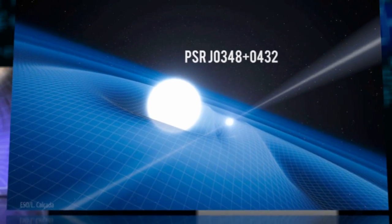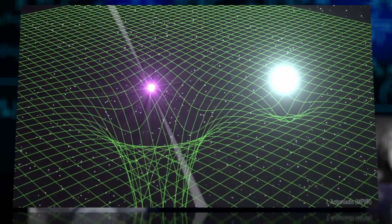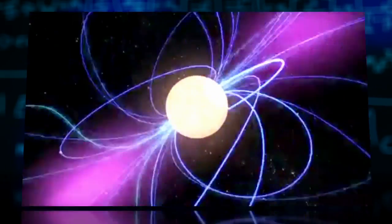The binary star system consists of a white dwarf and a pulsar that's only 12 miles across but has a mass twice that of the Sun, and spins 25 times per second.